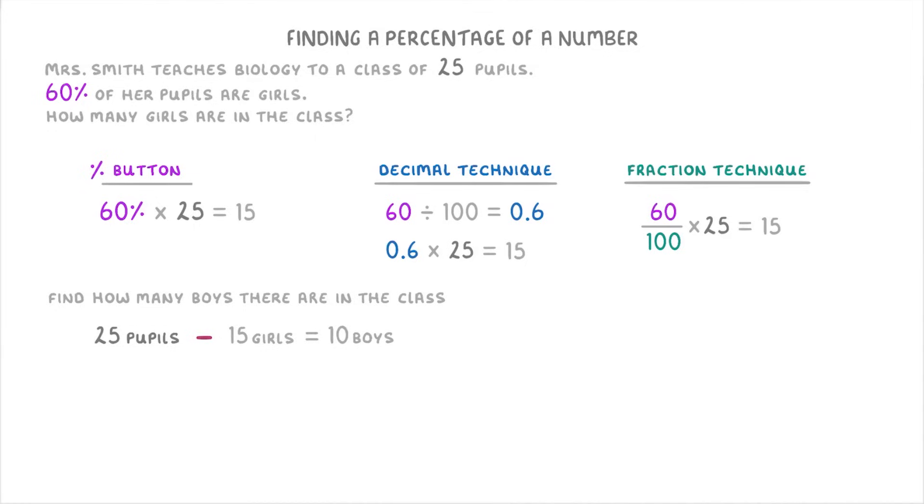Another way to do this question though, is to think of the 25 pupils as representing 100%, because that's the entire class. And then to find the number of boys as a percentage, we just take away the 60% that are girls. So 100% minus 60%, which tells us that the other 40% must be boys. Then we could just find 40% of 25, using any of our three techniques, which would tell us that there are 10 boys in the class.